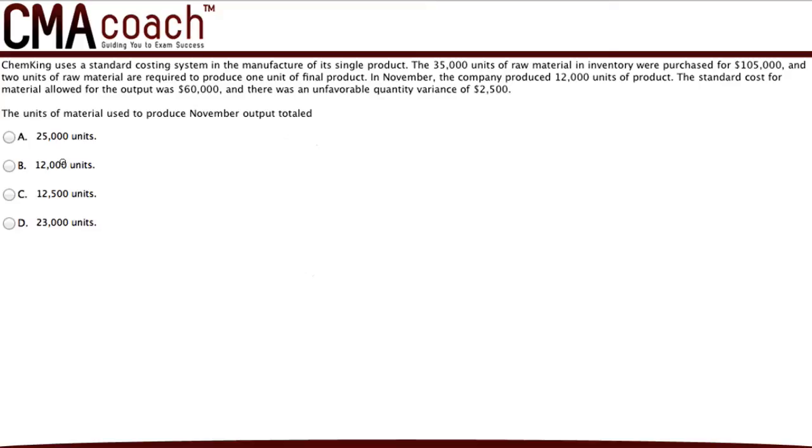So this is asking us for the number of units used to produce the output for the month. In this case, we need to use the material variance formula. And that is actual quantity minus standard quantity times standard price, and that equals the variance. Something to point out is the material variance will always be unfavorable if it's a positive number. If it's a negative number, the material variance will always be favorable. So that's a rule of thumb. Don't forget that. That's very important.